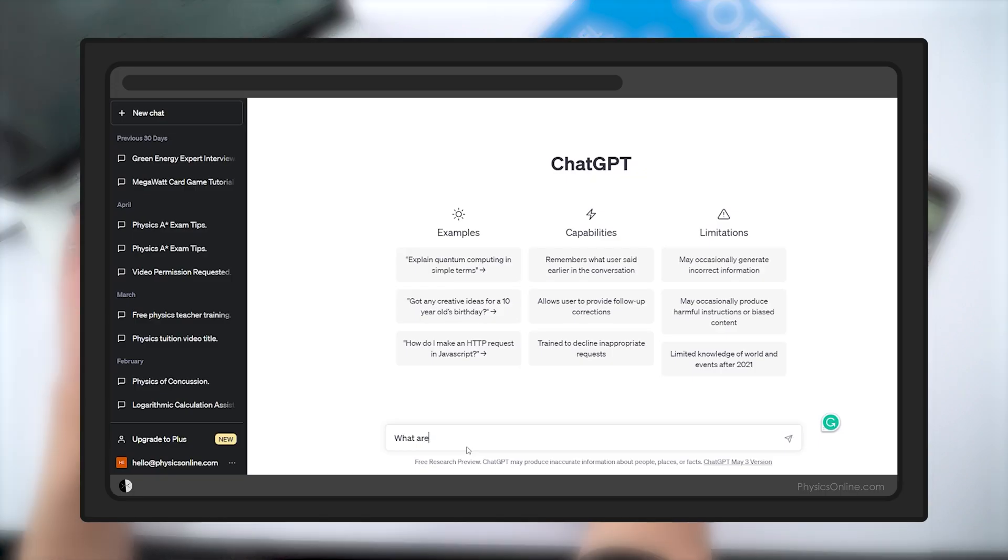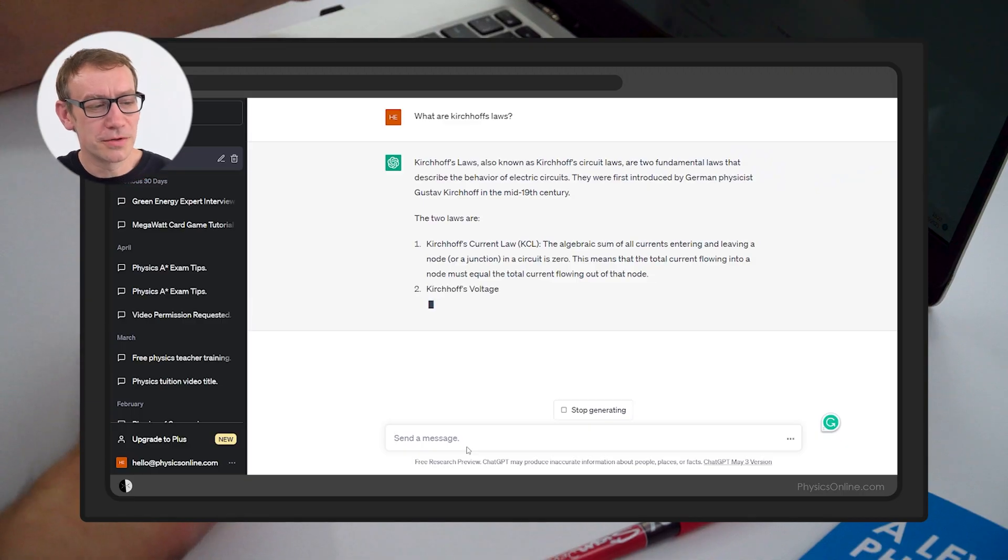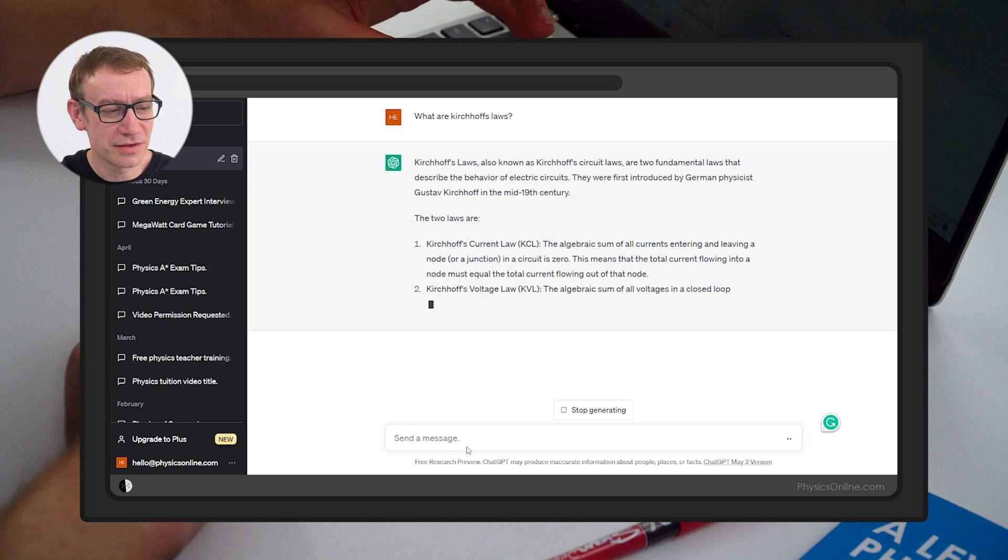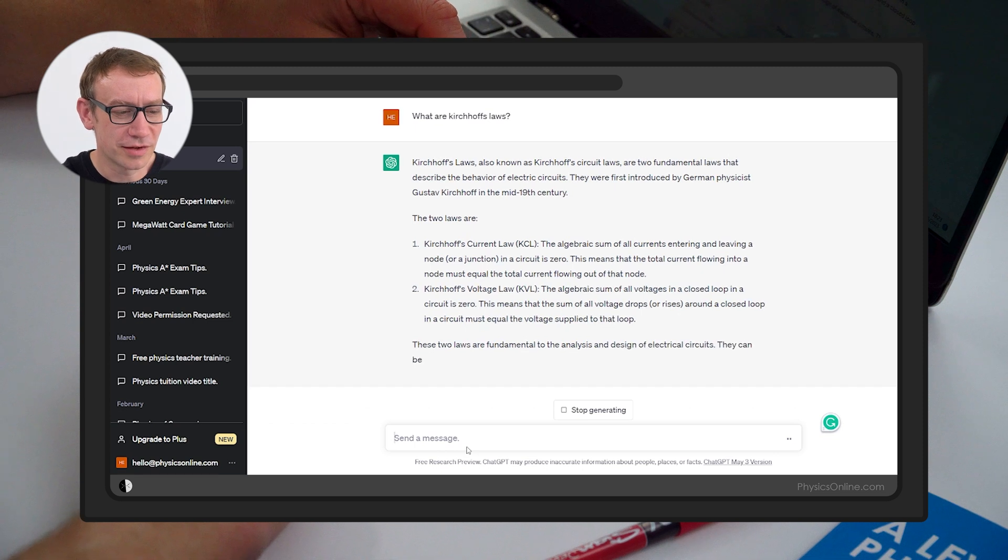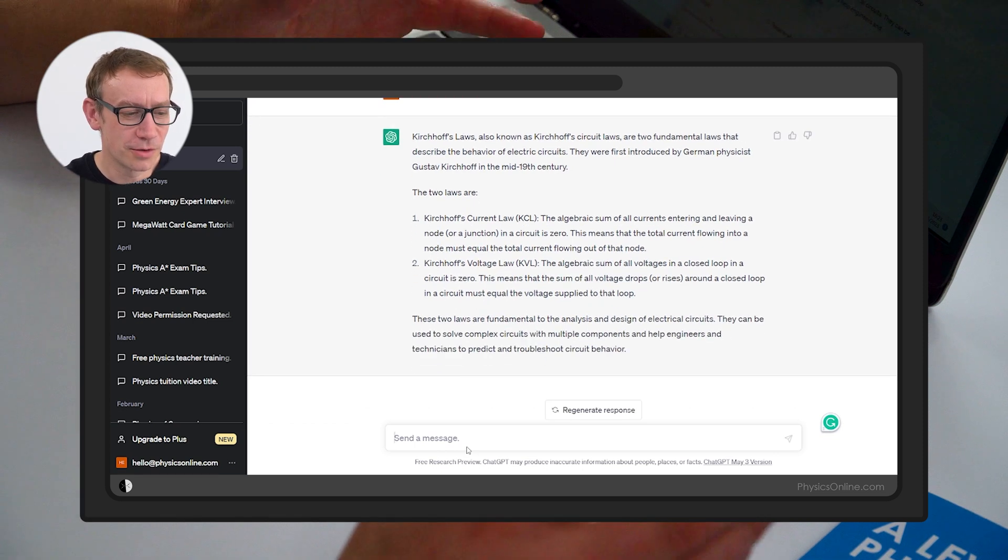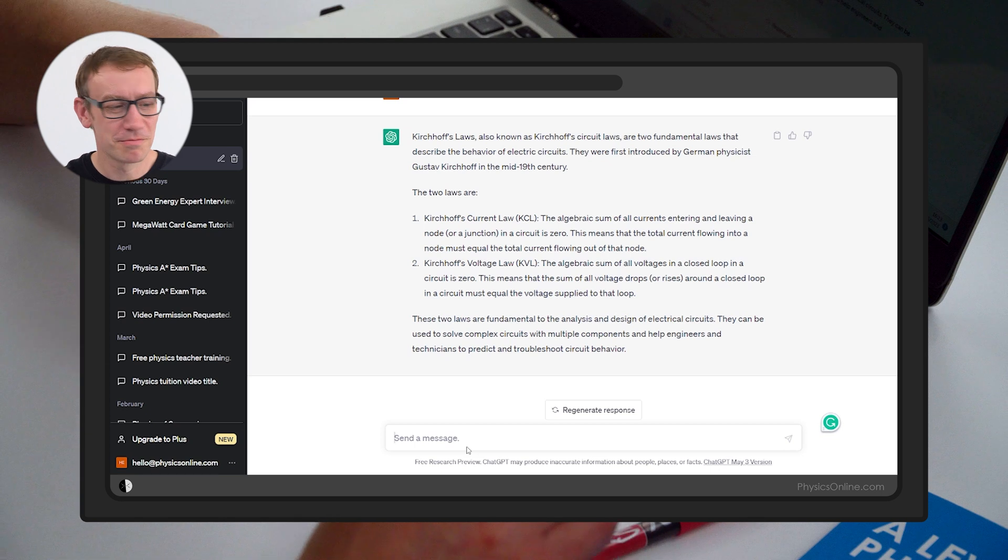So first of all, we can just ask what are Kirchhoff's laws? I think I've spelled Kirchhoff correctly. So these are laws to do with electrical circuits and the way that current and potential difference and EMF are in those circuits. What ChatGPT says is that they were introduced by this German physicist in the mid-19th century. Nice bit of history there. We've got Kirchhoff's current law, KCL. The sum of the currents entering or leaving a node or junction in the circuit is zero. Yep, perfect.